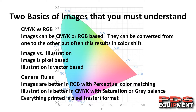Two basics of images that you must understand to optimize your color matching and color balancing abilities. First: CMYK versus RGB. Images can be CMYK or RGB based; they can be converted from one to the other but this often results in color shift. Second: image versus illustration. Images are pixel based; illustration is vector based. Anything taken with a camera is going to be a pixel based image. Anything you draw in Illustrator or CorelDRAW — circles, shapes, logos — is illustration based. You can scan an image and turn it into a vector; we do a lot of that with our texture files.